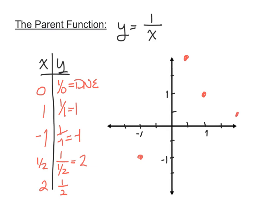We can start to see how this branch looks very similar to our exponential and logarithmic functions — it curves and approaches both axes but never touches them. In order for a fraction to equal 0, the numerator would have to equal 0. But looking at this fraction, that numerator is never going to equal 0, which is why we have a horizontal asymptote at y equals 0.